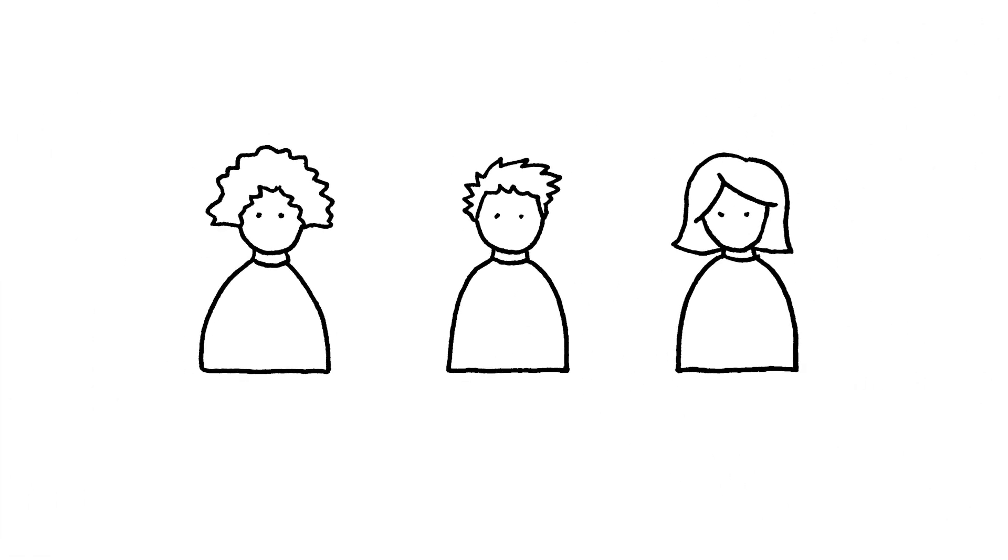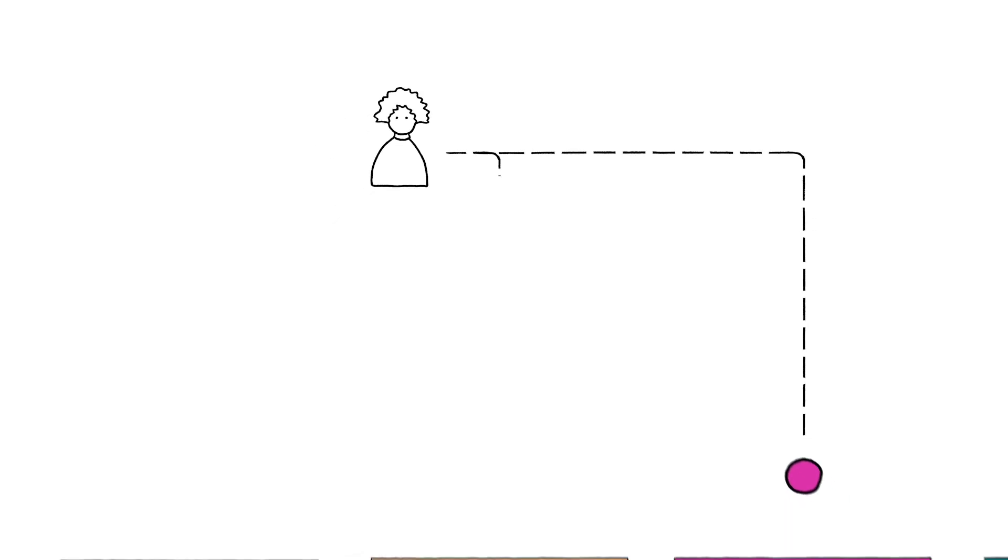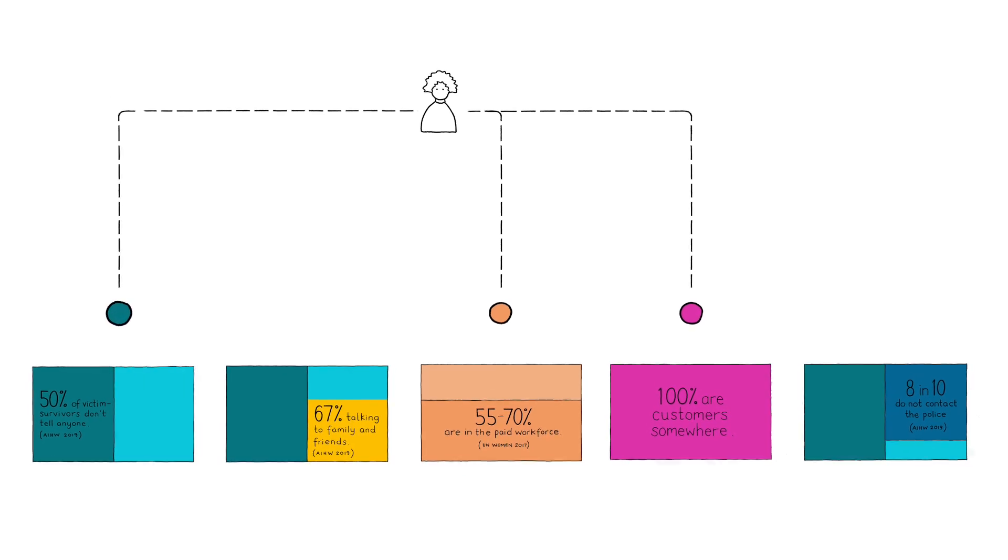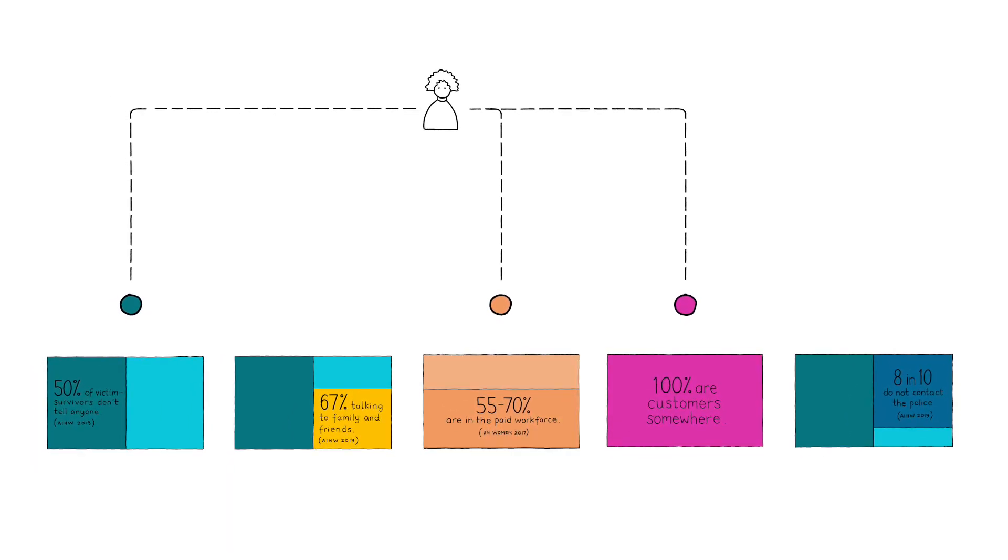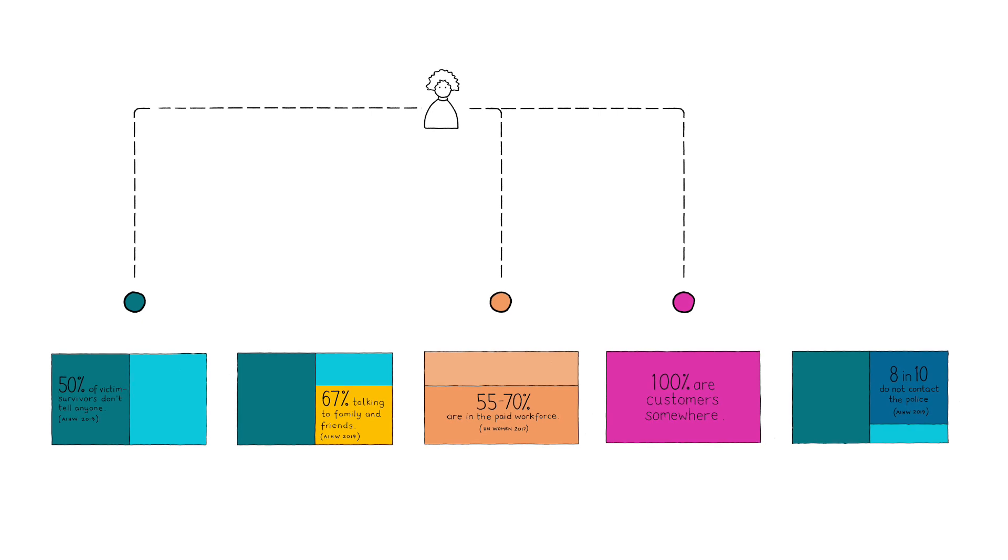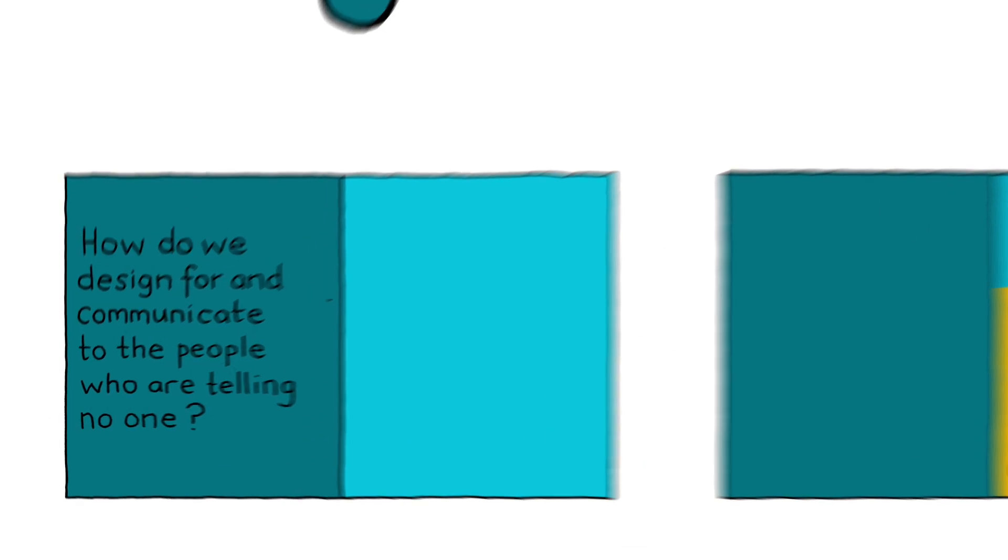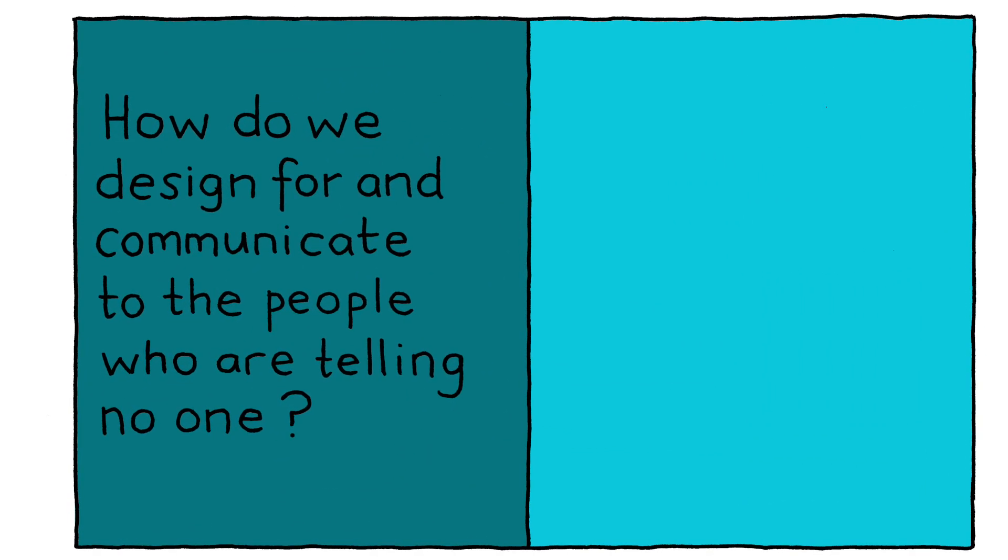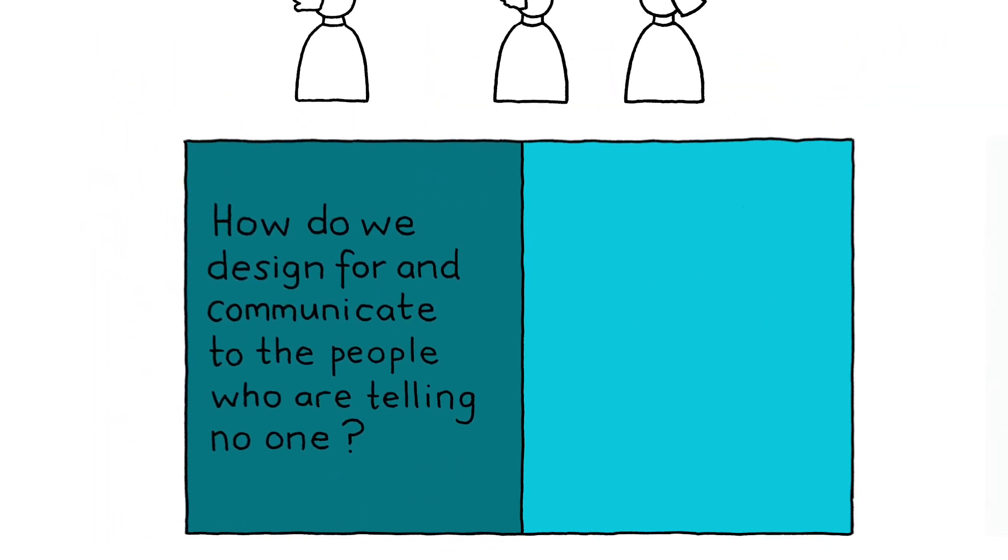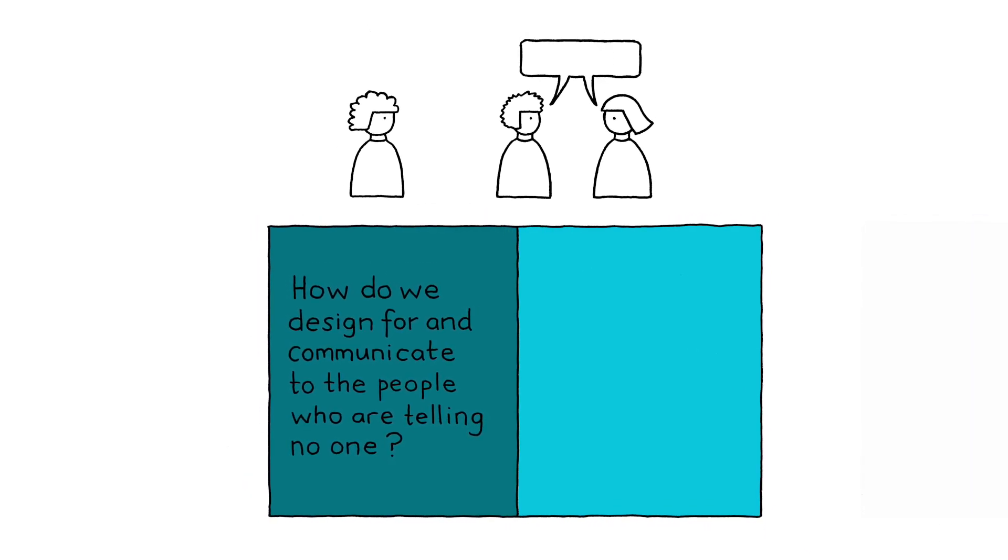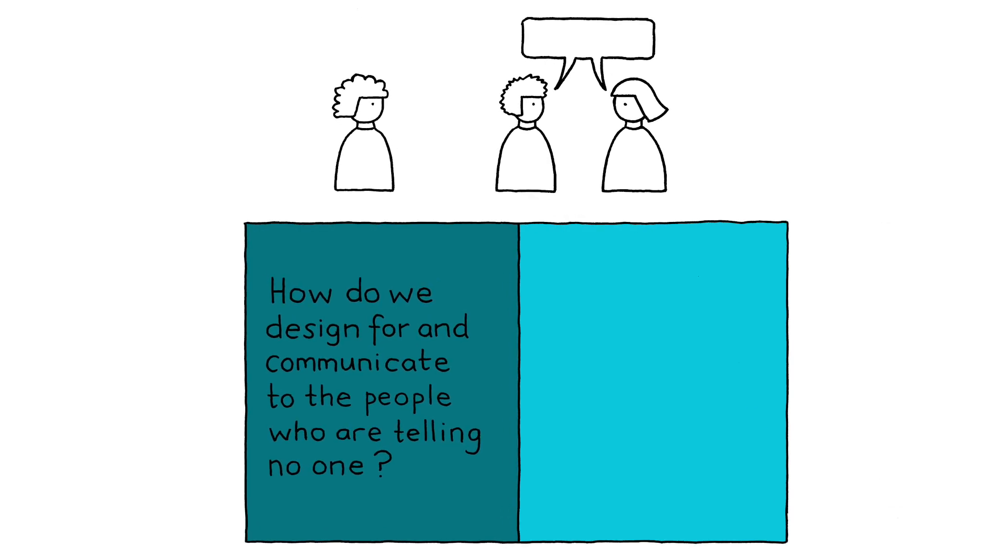Let's take a look at what this data might mean in three examples. Nisha is a customer or client somewhere. She is in the workforce, yet she is not telling anyone about her ex-husband's ongoing use of violence and abuse, and how she is protecting herself and her children on a daily basis. So, how do we design for and communicate to the people who are telling no one? What might the experience be like for someone in Nisha's situation if access to information or support is contingent on making contact?